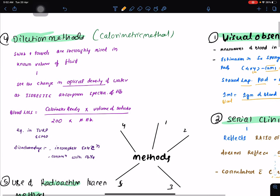The fourth one is dilution methods, or calorimetric method. Swabs and towels are thoroughly mixed in a known volume of fluid, and see the change in optical density of the water at isobestic absorption spectra of hemoglobin. In physiology lectures, you can see what is absorption spectra, what is isobestic point. Blood loss can be calculated by the formula: calorimetric reading multiplied by volume of the solution, divided by 200, into patient hemoglobin percentage.